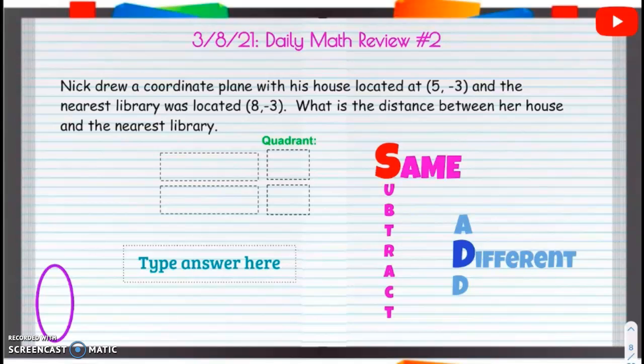Our daily math review number two. Nick drew a coordinate plane with his house located at 5, negative 3, and the nearest library was located at 8, negative 3. What is the distance between their house and the library?